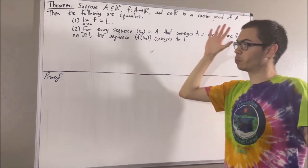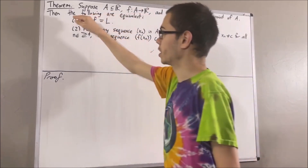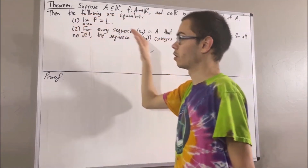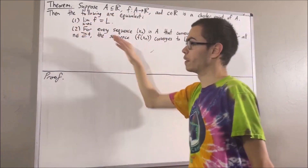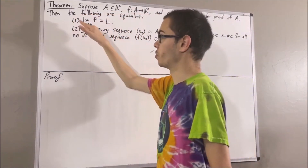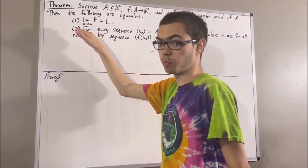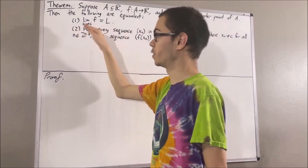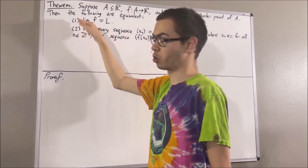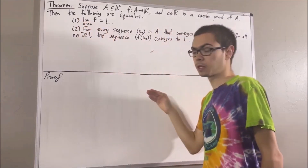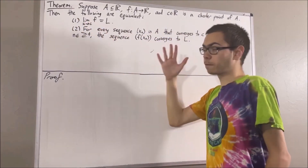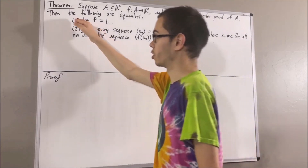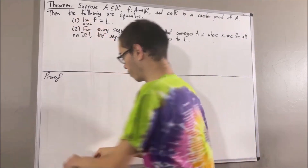Now, to prove that one and two are equivalent, we're going to prove if one is true then two is true. And then we're going to prove if two is true then one is true. Let's first prove if one is true, then two is true.